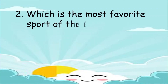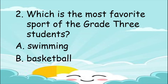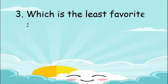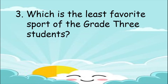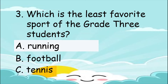Number 2: Which is the most favorite sport of grade 3 students? Is it A. Swimming, B. Basketball, or C. Tennis? The answer is letter B, basketball. For number 3: Which is the least favorite sport of grade 3 students? Is it A. Running, B. Football, or C. Tennis? The answer is letter A, running.